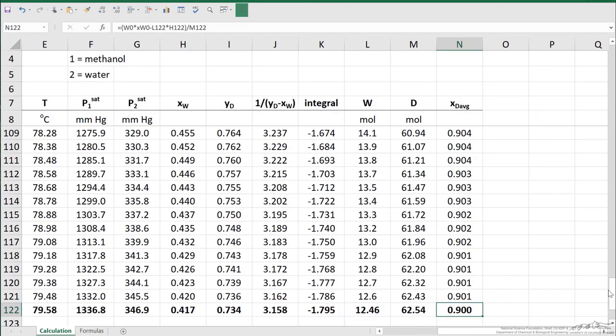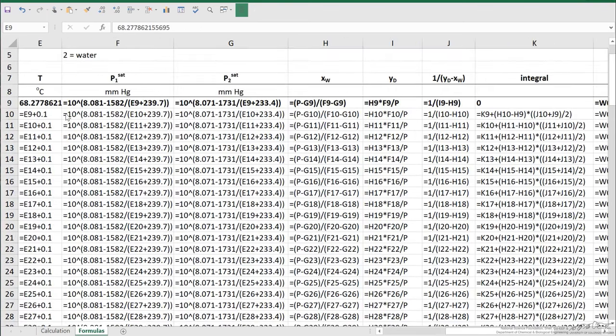We can also look at these equations in more detail. Let's look at this formula page. You can see I've stepped through. This is my starting temperature, and I add a tenth of a degree. I then use the Antoine equations for P1_sat and P2_sat.